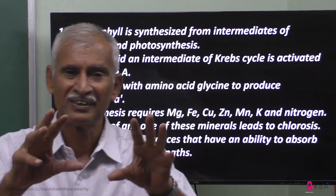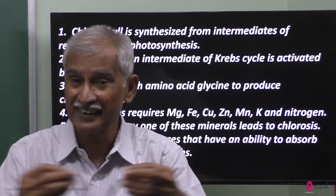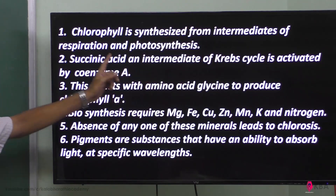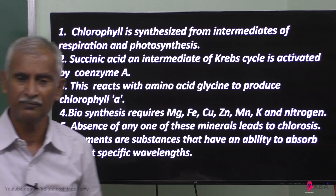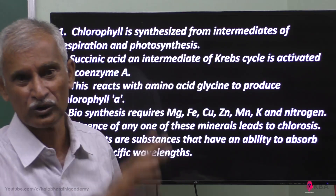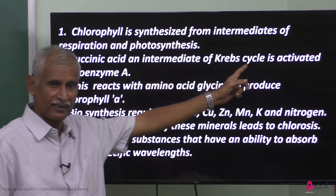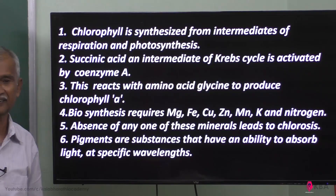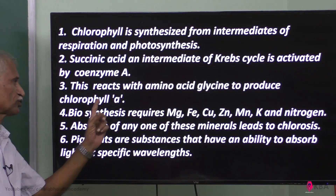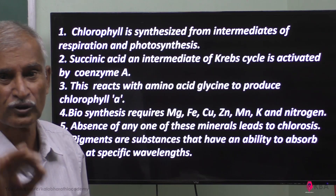The intermediary end product is ATP, and the end product is glucose. Chlorophyll is synthesized from intermediates of respiration and photosynthesis. In respiration, glycolysis leads to pyruvic acid, then the Krebs cycle. Succinic acid, an intermediate of the Krebs cycle, is activated by coenzyme A. This succinic acid activated by coenzyme A combines with amino acid glycine to produce chlorophyll A.